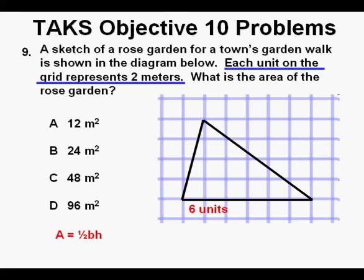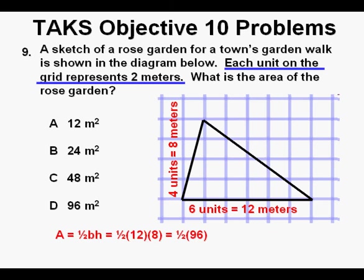And that means that this base is 6 units in length. That will equal 12 meters. And it means also that this height of the triangle of 4 units really equals 8 meters. So that gives us an area of 1 half of 12 times 8, which equals 1 half of 96, which equals 48 square meters. And this is where we find 48 square meters, so we circle our correct answer C.